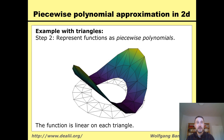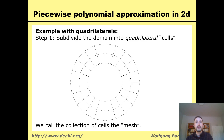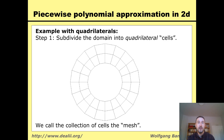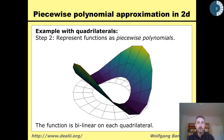I can do this with triangles, but I can also do this with something called quadrilaterals — literally a four-sided object. You should think of quadrilaterals as deformed squares or rectangles. I can subdivide my domain — this annulus — into quadrilaterals, and then define a piecewise polynomial function on this domain that is polynomial on each cell. These functions are not necessarily linear anymore; they are what we call bilinear.